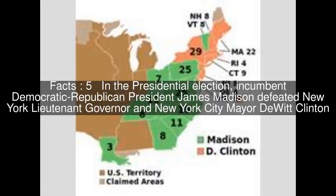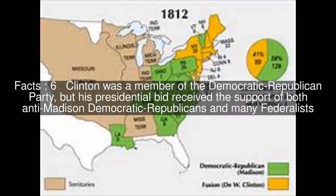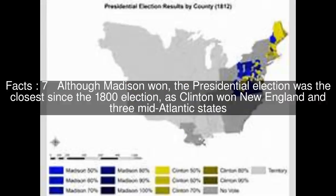In the presidential election, incumbent Democratic-Republican President James Madison defeated New York Lieutenant Governor and New York City Mayor DeWitt Clinton. Clinton was a member of the Democratic-Republican Party, but his presidential bid received the support of both anti-Madison Democratic-Republicans and many Federalists. Although Madison won, the presidential election was the closest since the 1800 election, as Clinton won New England and three Mid-Atlantic states.